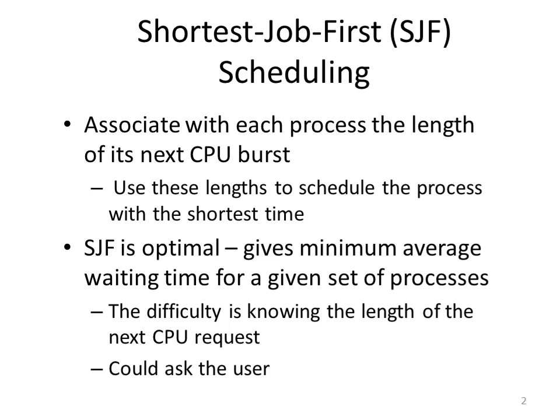It is based on the length of the process's next CPU burst cycle. When the CPU is available, it is assigned to the process that has the smallest next CPU burst cycle. If the next CPU burst of two processes are the same, then first come first serve algorithm is used to break the tie. It comes with both non-preemptive and preemptive variants, and currently we will discuss about the non-preemptive algorithm.